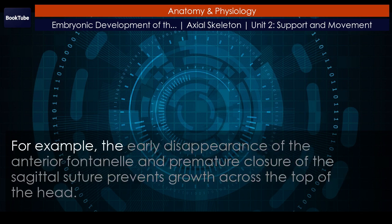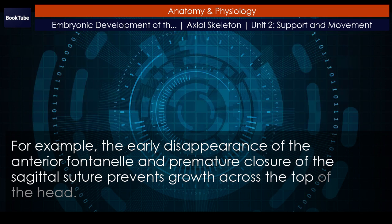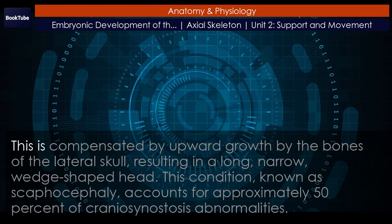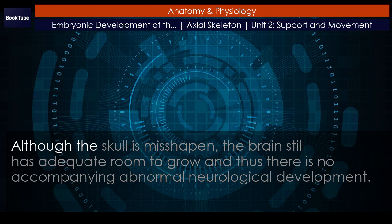For example, the early disappearance of the anterior fontanelle and premature closure of the sagittal suture prevents growth across the top of the head. This is compensated by upward growth by the bones of the lateral skull, resulting in a long, narrow, wedge-shaped head. This condition, known as scaphocephaly, accounts for approximately 50% of craniosynostosis abnormalities. Although the skull is misshapen, the brain still has adequate room to grow and thus there is no accompanying abnormal neurological development.